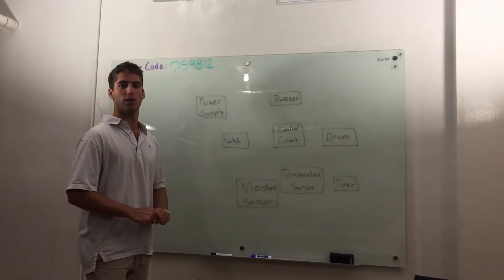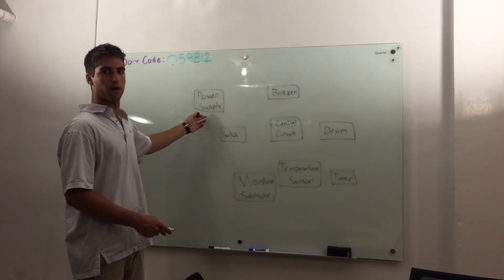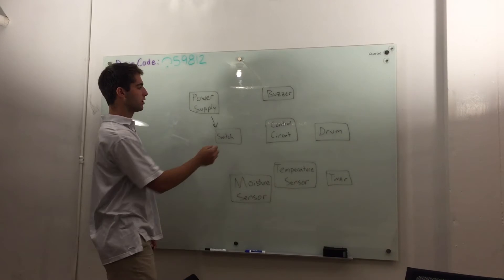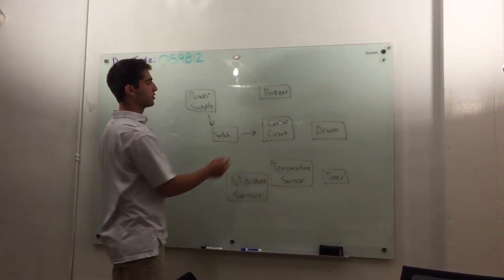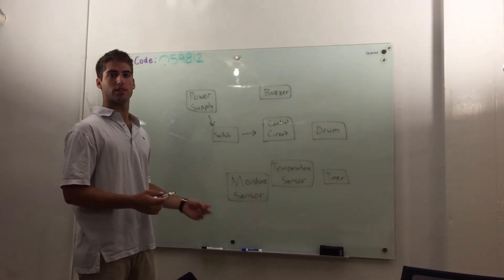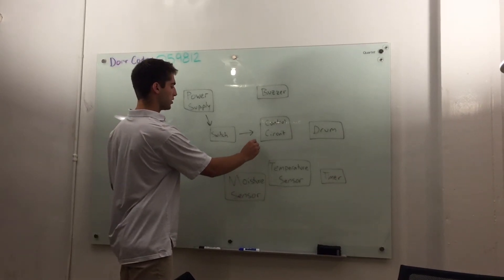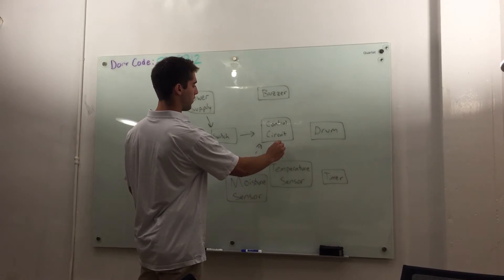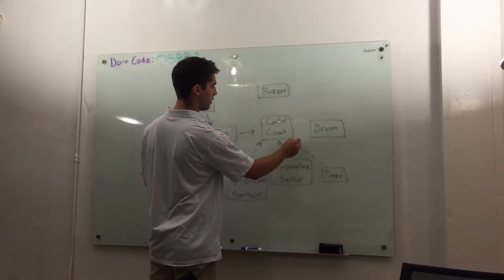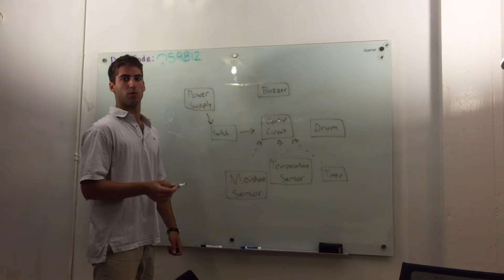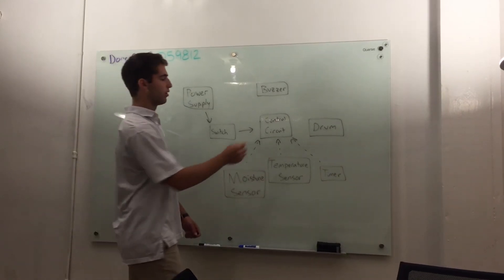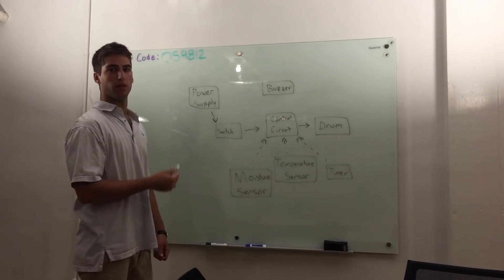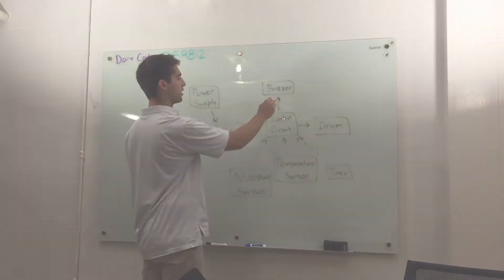So how does this sensor dryer work? Well we start off with the power supply. That connects to the switch which in turn connects to the control circuit. The control circuit has three main sensors that go into it. The moisture sensor, the temperature sensor, and the timer. All these sensors work with the control circuit in order to make this dryer dry the clothes. When the clothes are done there's a buzzer that comes off the control circuit.